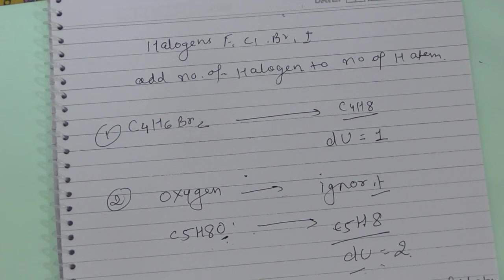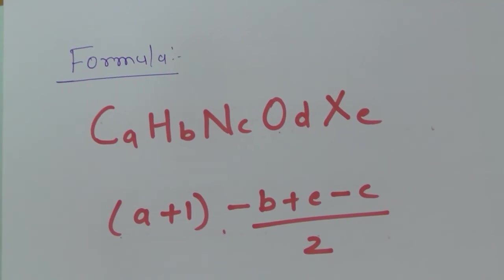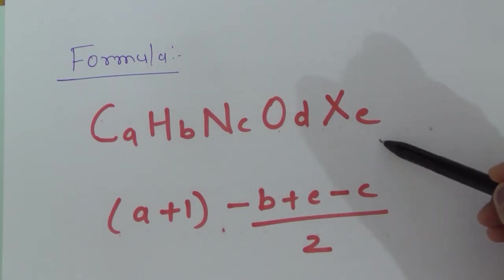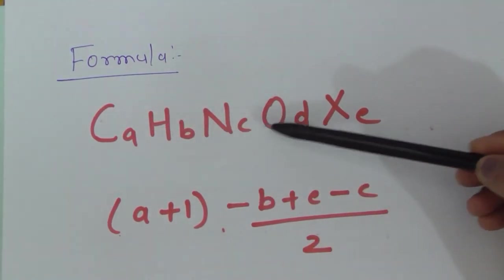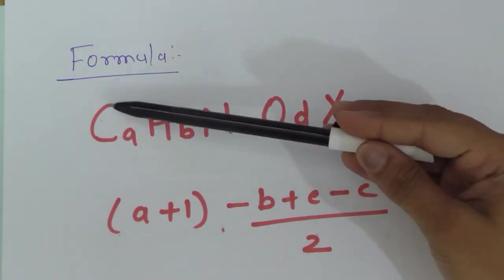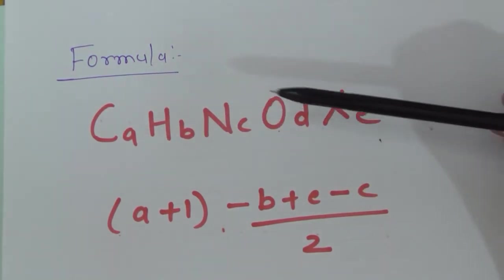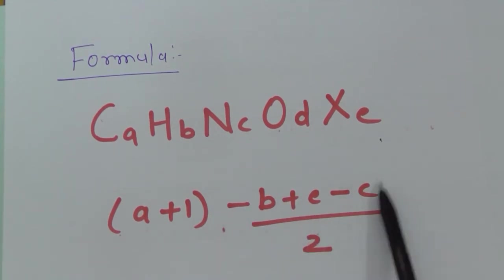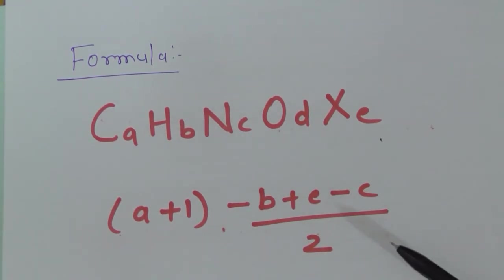Now for the formula: the degree of unsaturation can also be calculated using the formula for a compound CaHbNcOdXe, where the formula is: a + 1 − (b + e − c) / 2. Here a is carbon count, b is hydrogen, c is nitrogen, d is oxygen, and e is halogens. Using this formula, we can find the degree of unsaturation for any given sample.